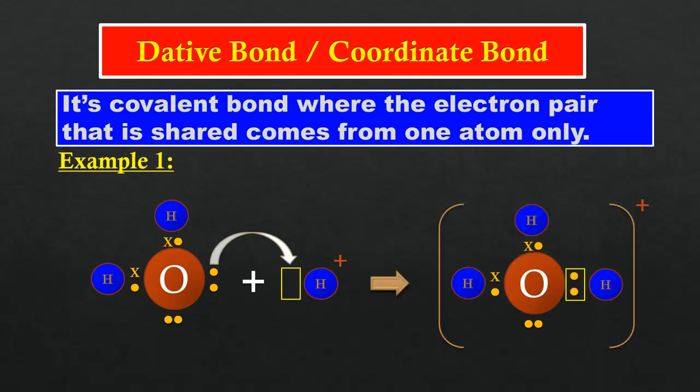In the hydronium ion, oxygen atom and all the hydrogen atoms have achieved stable octet and duplet electron arrangement respectively. The oxygen atom becomes the donor and hydrogen ion becomes the acceptor.